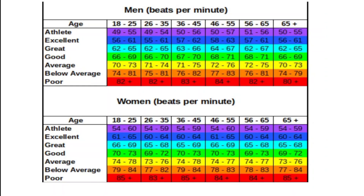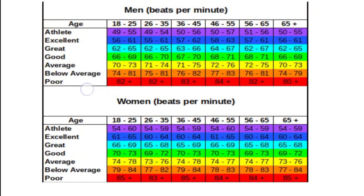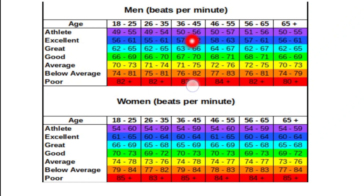Next, let's look at the pulse rate or heart rate according to age group and sex. For the age group 18 to 25, athletes can have 49 to 55 beats per minute. Age group 26 to 35 has a range of 49 to 54. Age group 36 to 45 is 52 to 56, and age group 46 to 55 is 52 to 57 beats per minute.